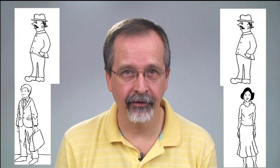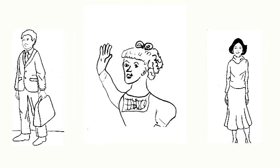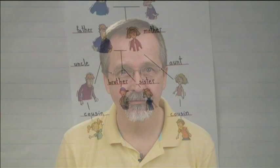Everyone comes from a family — everyone has a father and a mother. The father of my father or mother is called my grandfather. The mother of my mother or father is called my grandmother. When my father or mother has a brother, this is called my uncle. When my father or mother has a sister, this is called my aunt. When my aunt or uncle has a child, this child is called my cousin. To say cousin, it does not matter whether it's a boy or a girl — a boy is a cousin and a girl is a cousin.